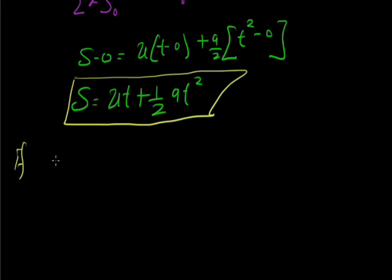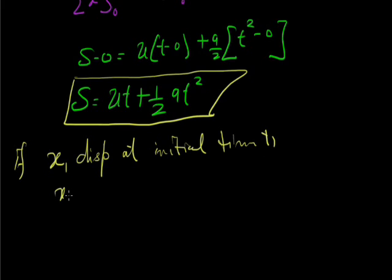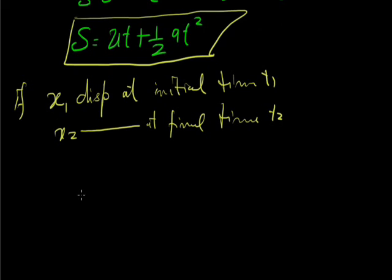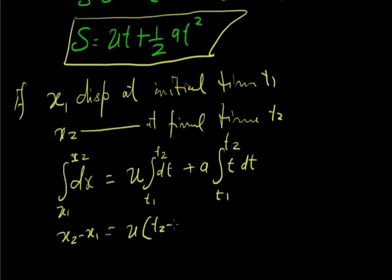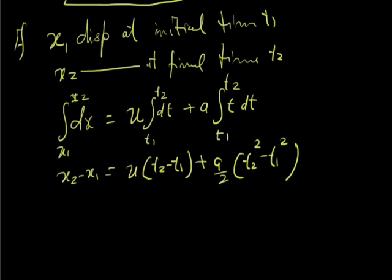If x1 is the displacement at initial time t1 and x2 is the displacement at final time t2, then integrating dx from x1 to x2 equals u dt from t1 to t2 plus a·t dt from t1 to t2. This gives x2 minus x1 equal to u into t2 minus t1 plus a by 2 times t2 squared minus t1 squared. This is the general form of the second equation.